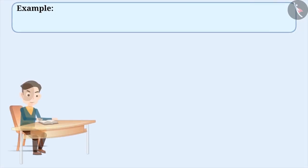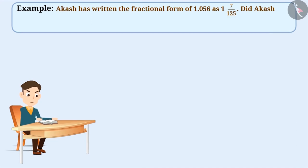Next example. Akash has written the fractional form of 1.056 as 1 and 7 by 125. Did Akash represent the decimal number in the fraction form in a correct way?